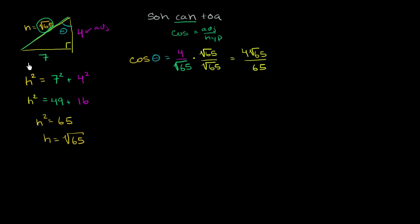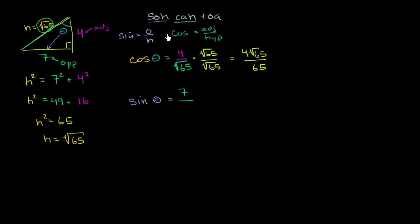Now let's do the other core trig functions. What is the sine of theta? From SOHCAHTOA, sine is opposite over hypotenuse. For this angle, the opposite side is the 7 — it's what the angle opens into. So sine of theta is 7 over the square root of 65. If we rationalize, multiplying by the square root of 65 over the square root of 65, we get 7 square roots of 65 over 65.